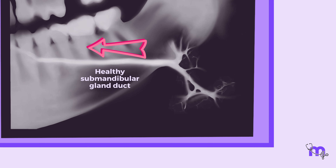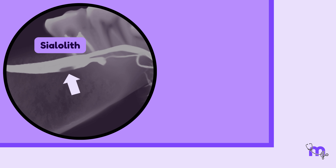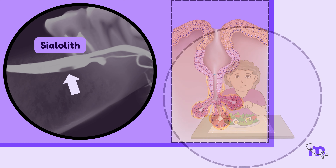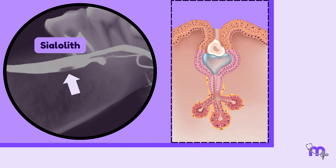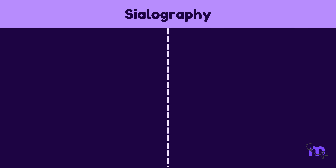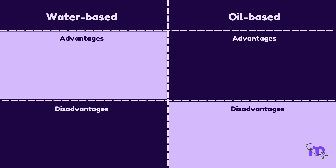The radiograph revealed an abnormal widening of the submandibular gland duct in its middle section. In this area, the duct measured more than 6 mm wide, which is significantly larger than normal — a healthy submandibular gland duct typically measures around 3–4 mm and gradually narrows towards the end. Interestingly, the radiograph also showed a radiolucent area within the dilated portion of the duct. This radiolucent finding was a sialolith. The presence of the sialolith explained the patient's symptoms of saliva pooling, swelling, and pain during meals, as the stone likely blocked the duct, preventing saliva from draining properly.